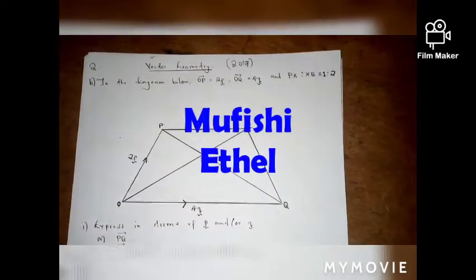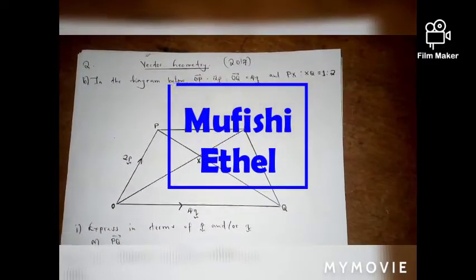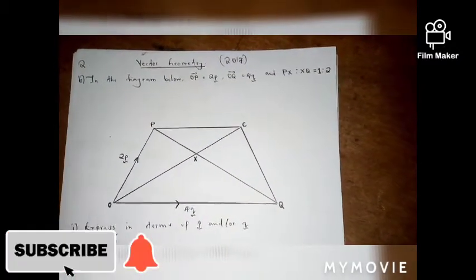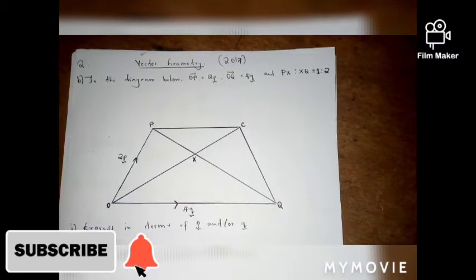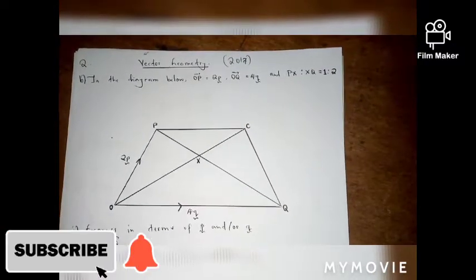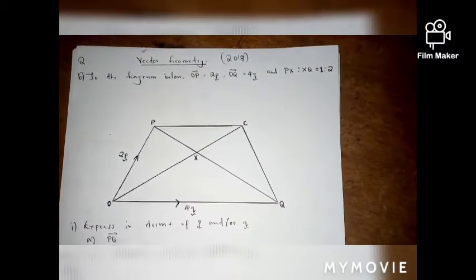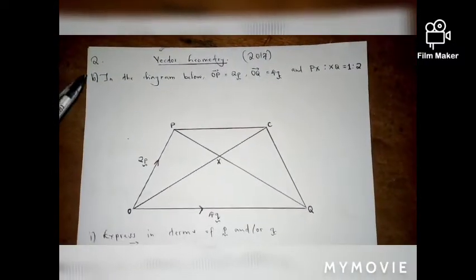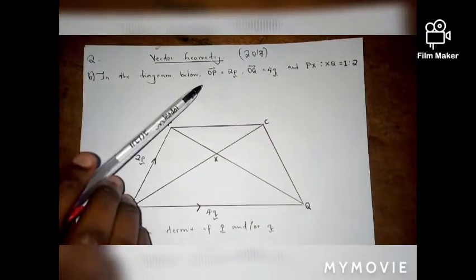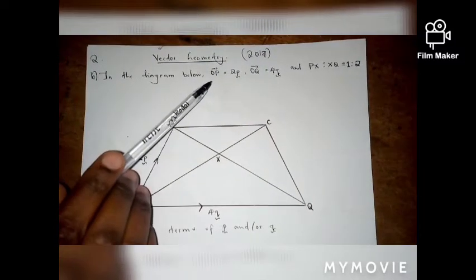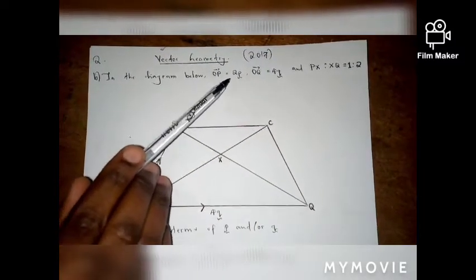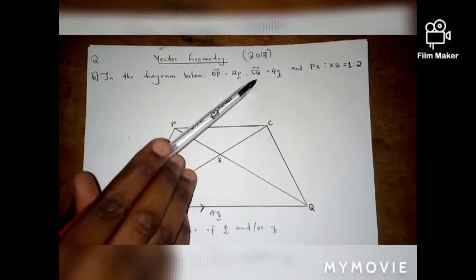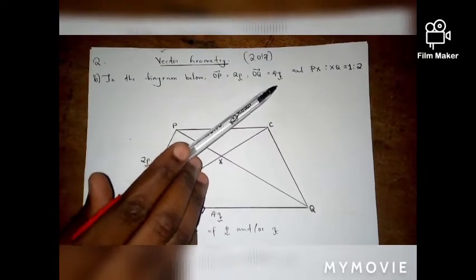Hello and welcome to this video. Today we are going to solve a question from the 2017 past paper on vector geometry. Our question reads: in the diagram below, vector OP equals 2p and vector OQ equals 4q.